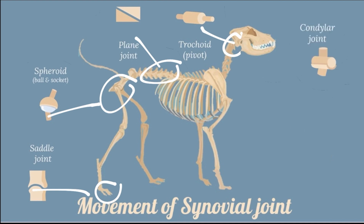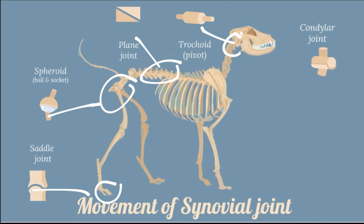The condylar joint has convex articular condyles that articulate with a somewhat concave articular surface. They resemble ginglymous joints but permit more movement. An example is the temporomandibular and femorotibial, or stifle, joint. Flexion, extension, and a little rotation are permitted by such a joint.